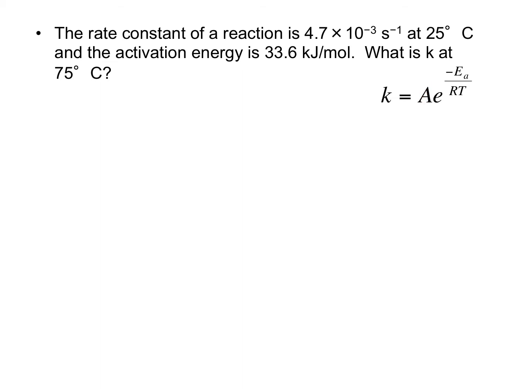However, at 25 degrees Celsius, the only thing we don't know is the frequency factor. So at 25 degrees Celsius, we know K, we know the activation energy, and we know R and T. So I think what our strategy here should be is to use the information they gave us at 25 degrees Celsius to calculate the frequency factor. And then once we have the frequency factor, we'll be able to calculate what the rate constant should be at 75 degrees Celsius.